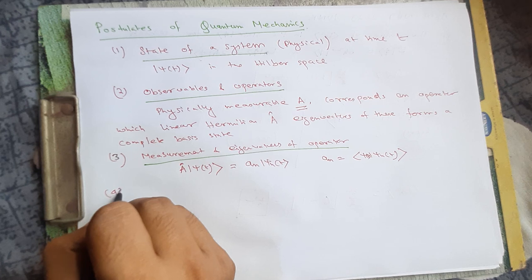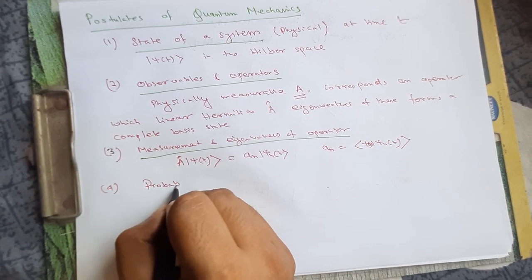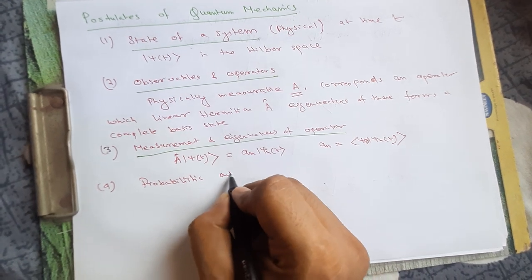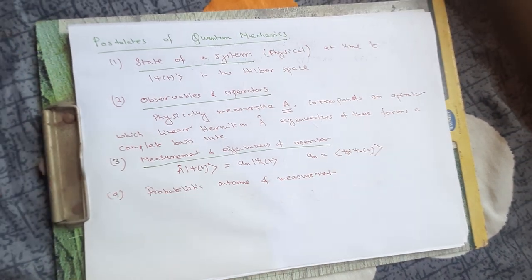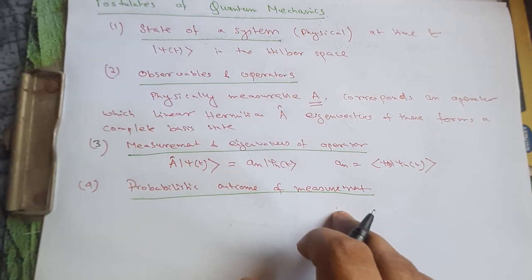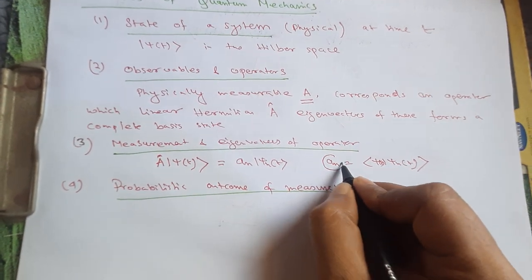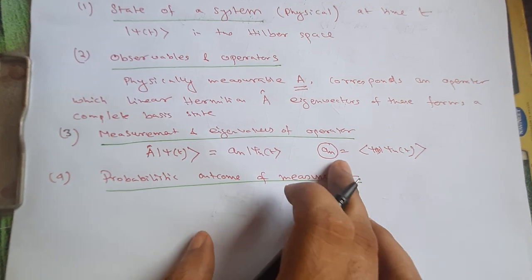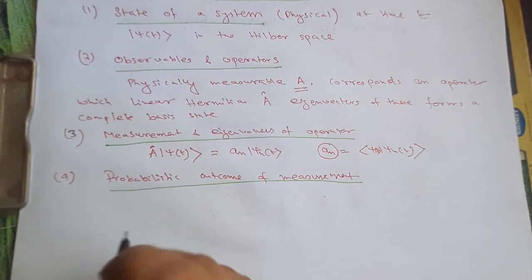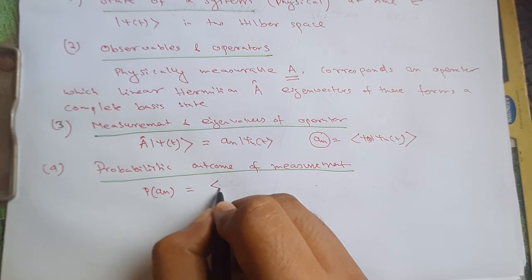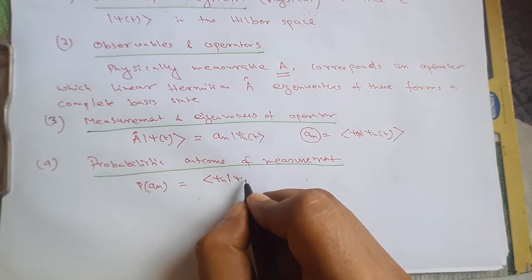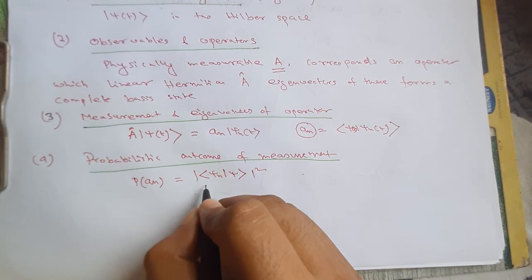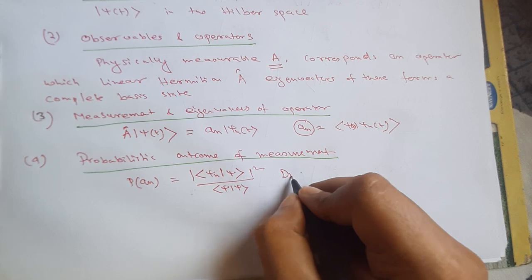The fourth postulate is the probabilistic outcome of measurement. We say probabilistic because Aₙ is one of the eigenvalues — the eigenvalue could be anything. The probability of getting Aₙ is given by |⟨ψₙ|ψ⟩|² divided by ⟨ψ|ψ⟩. This is the discrete form.